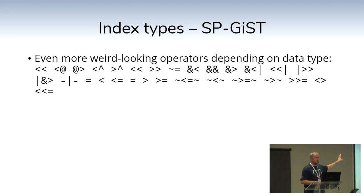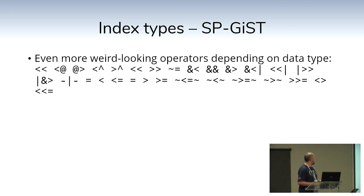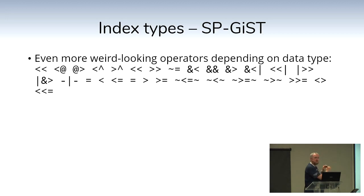SP-GiST is best for data with clustering — it's not a balanced tree, so you start off with an IP like 41 and it goes to that node, then dot 178, dot 152, and so on. The operators for SP-GiST get very specific; if you're using a space-partitioned index, look it up in the reference material — it tells you exactly which operators to use for which data types.